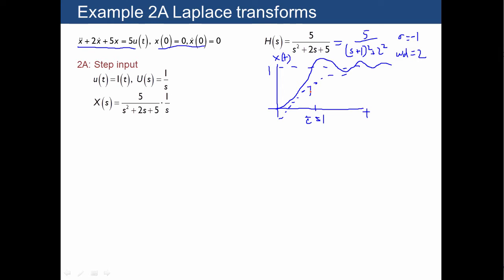And the exponential envelope for this has a time constant of 1 that comes from sigma. And then the sinusoid, I've probably drawn this a little bit inaccurately, but the sinusoid period is 2 pi over omega d.